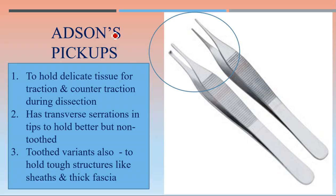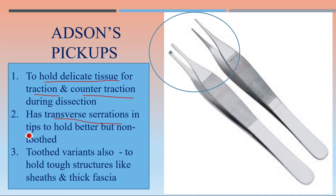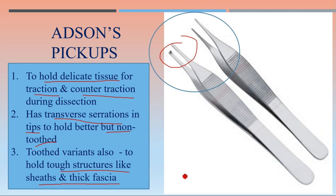Another one is Adson's pickups — slender, with a smaller slender distal end. The classic Adson's pickups are plain without any tooth, though toothed variants are also available. It is used to hold delicate tissue for traction and counter-traction during dissection. It has transverse serrations. The toothed variants can be used to hold tougher structures like sheets and thick fascia. Adson's pickups are very commonly used in plastic surgery and general surgery.